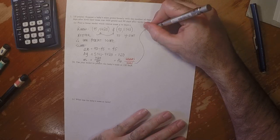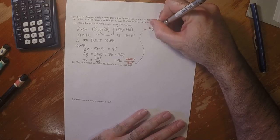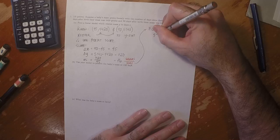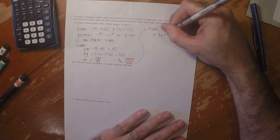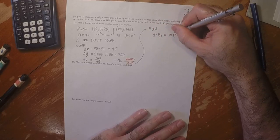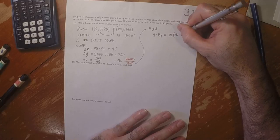So to find the equation, that'd be y minus y1 equals m times x minus x1.